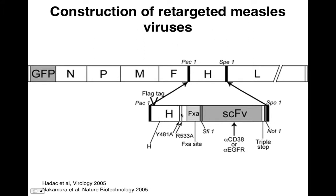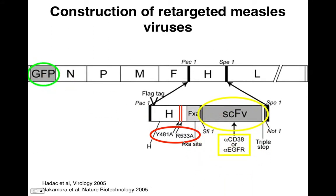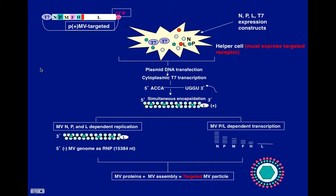The hemagglutinin becomes largely dysfunctional in its original role and only acts as part of the new targeting construct. Notably, this particular engineered virus has GFP at the front for detection. The helper cell line used to package the virus needs to express the new receptor you're targeting; otherwise the virus won't be able to do anything during production.